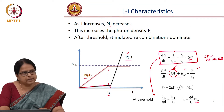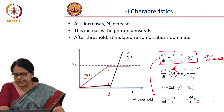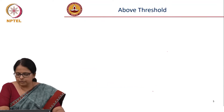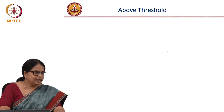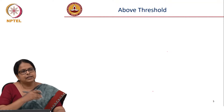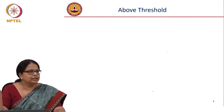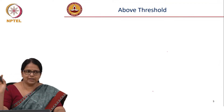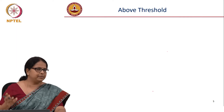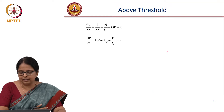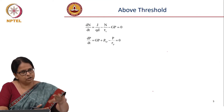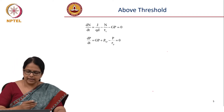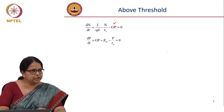This is how we calculate the threshold current. But we are interested in the power coming out of the system — specifically what happens above threshold. To find power above threshold, we consider all processes: injection, spontaneous emission, loss, and stimulated emission. So we must include the GP term. We return to the rate equations, which above threshold are still in steady state (no modulation), so both equations are still equal to zero, but now GP is significant and cannot be ignored.